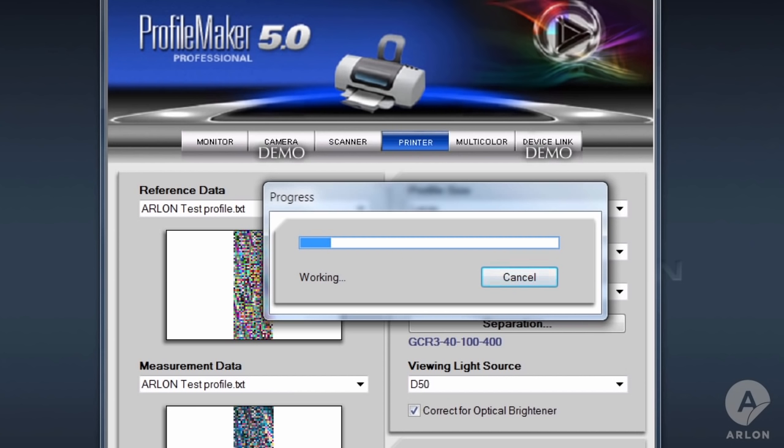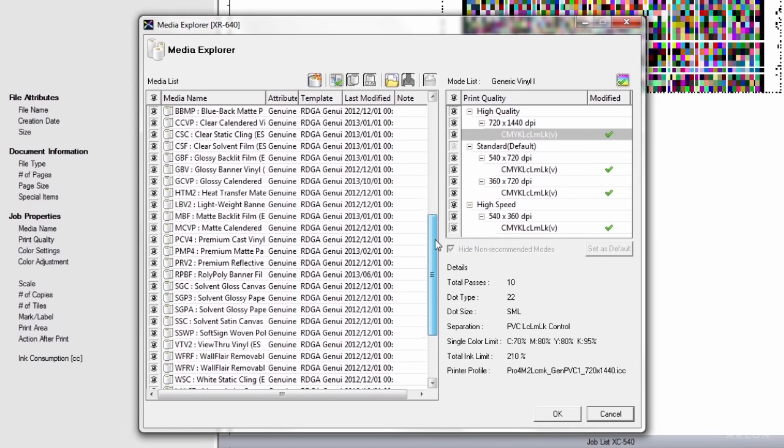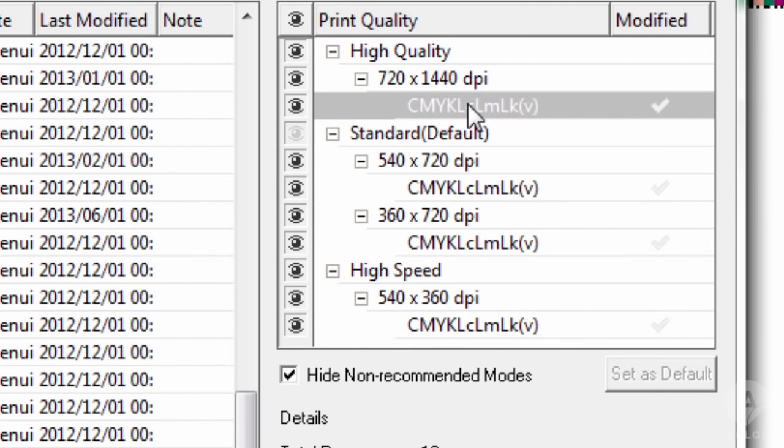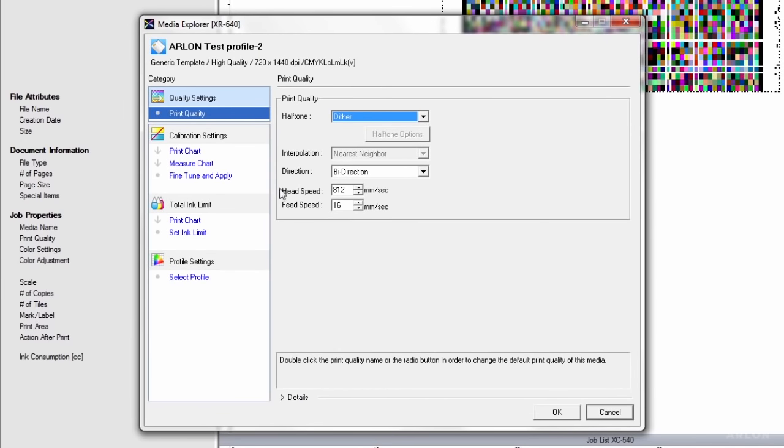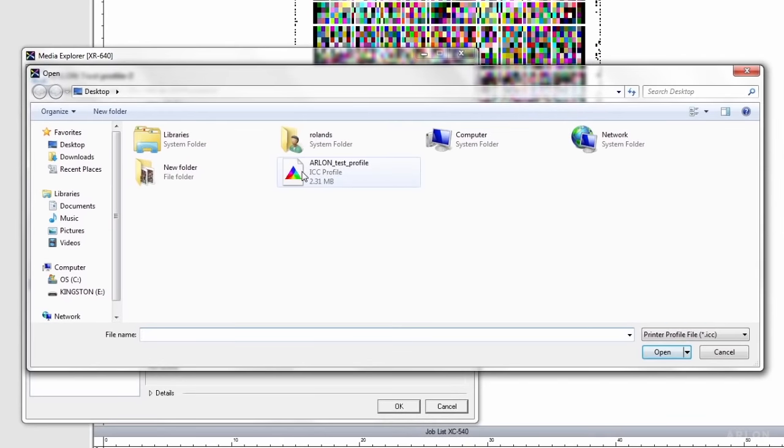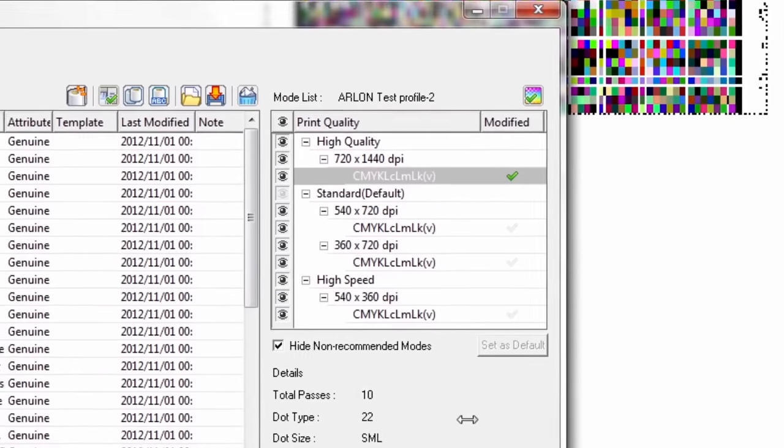Copy the ICC profile to your desktop for easy access. Return to VersaWorks Media Explorer and select your media profile. Because we have not yet imported an ICC profile, the check mark is grayed out. Double click, then click on select profile. Import your new ICC profile. Click OK to apply. We can now see that the check mark by the media settings is green, indicating the process is complete.